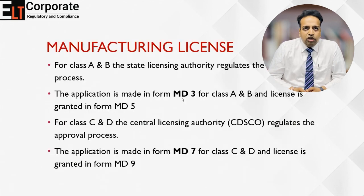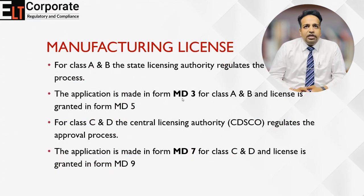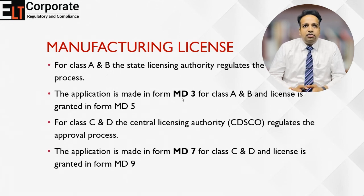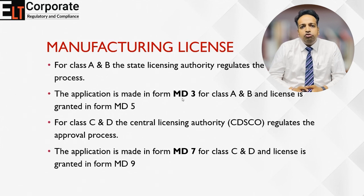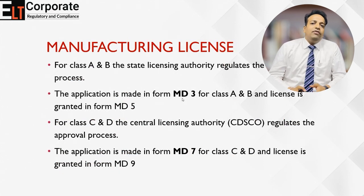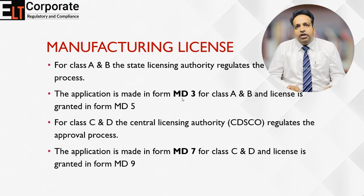For manufacturing Class A and B devices, you need to apply under Form MD-3 and the license is generally granted under Form MD-5. It should be noted that for Class A and B, the state governments are responsible for issuing the manufacturing license. For Class C and D, you need to apply for the manufacturing license under Form MD-7, wherein the government will grant the license under Form MD-9.